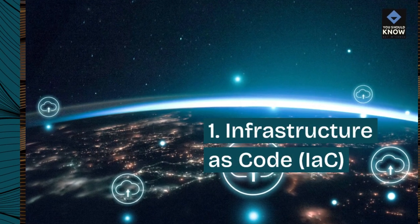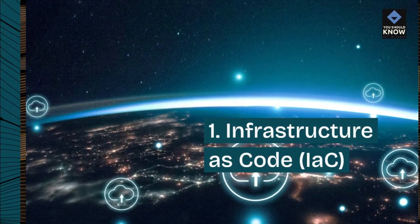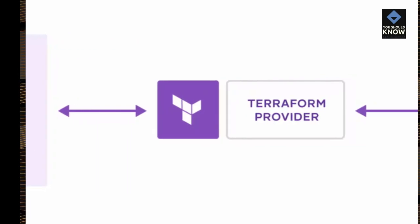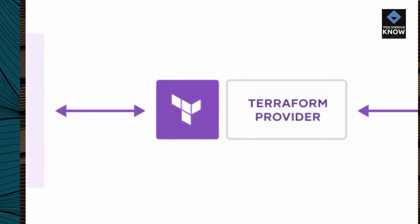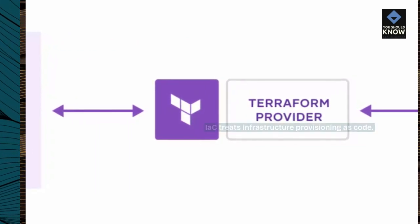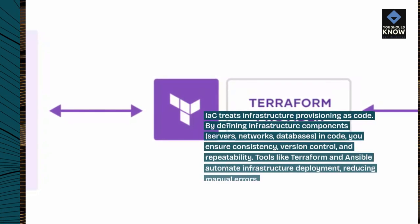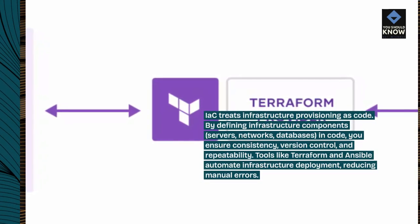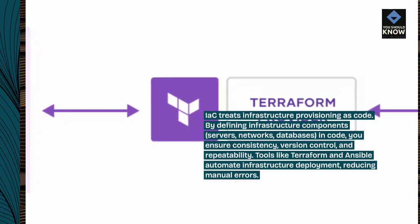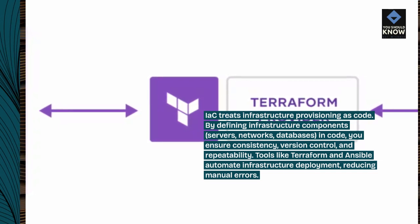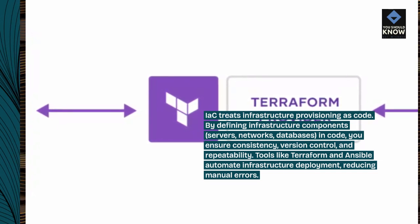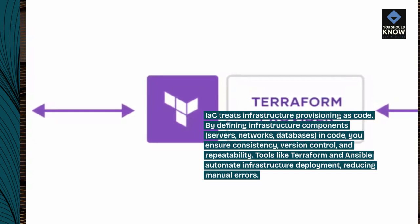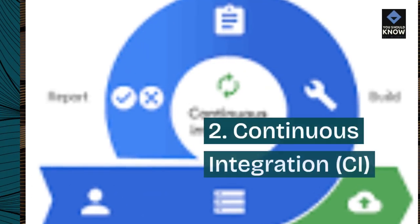1. Infrastructure as Code (IaC). IaC treats infrastructure provisioning as code. By defining infrastructure components — servers, networks, databases — in code, you ensure consistency, version control, and repeatability. Tools like Terraform and Ansible automate infrastructure deployment, reducing manual errors.